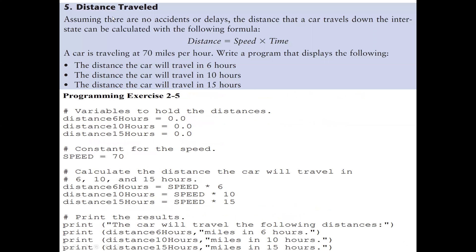Now let's look at our second problem. Assuming there are no accidents or delays, the distance a car travels on the interstate can be calculated with the formula: distance equals speed times time. We should write a program where the condition is that the car travels at 70 miles per hour. The program should display the distance the car will travel in six hours, in ten hours, and in fifteen hours.